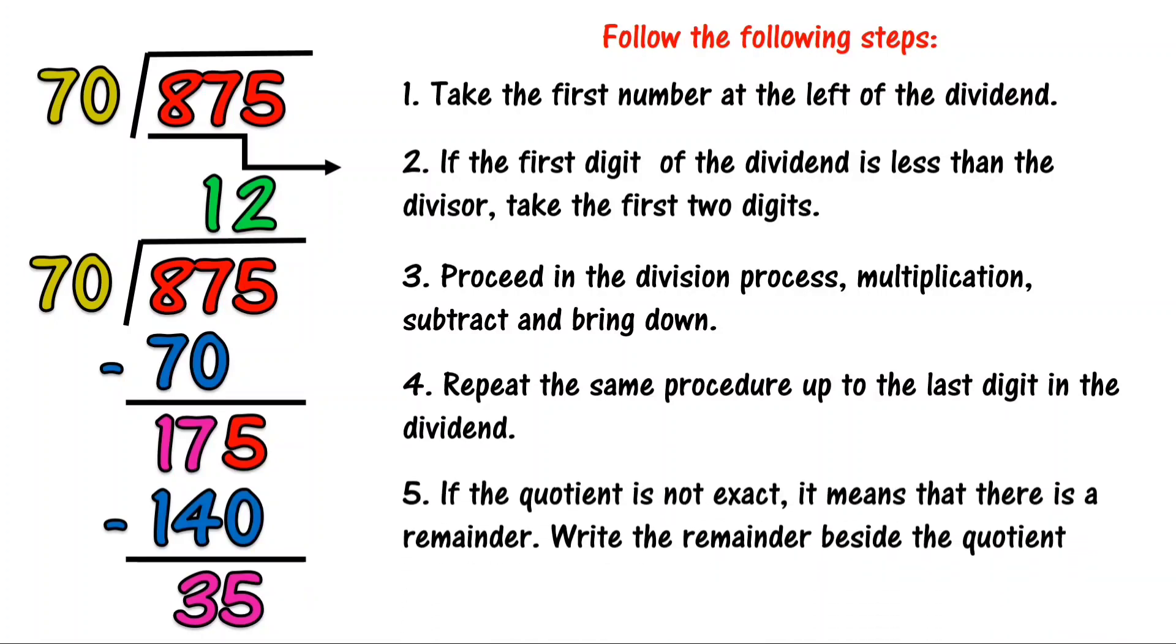And for the last step, if the quotient is not exact, it means that there is a remainder. Write the remainder beside the quotient. Our final answer is 12, remainder 35.